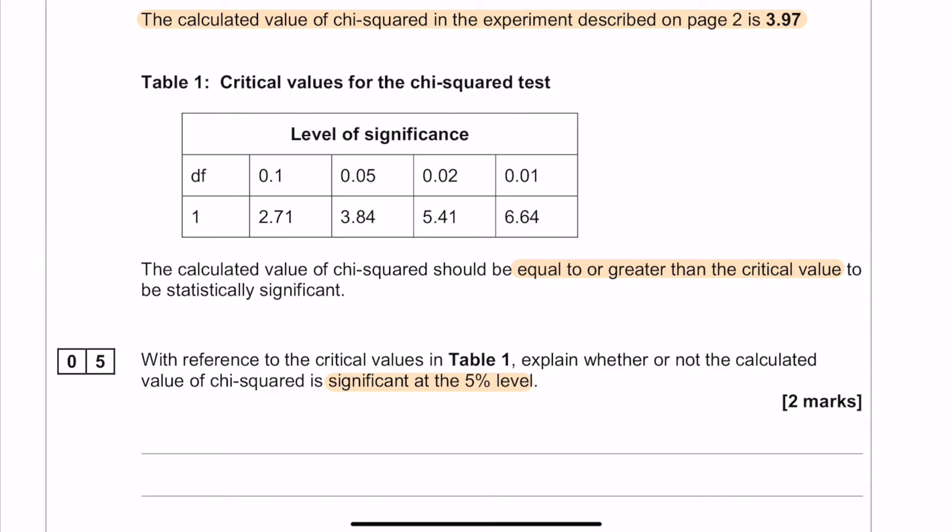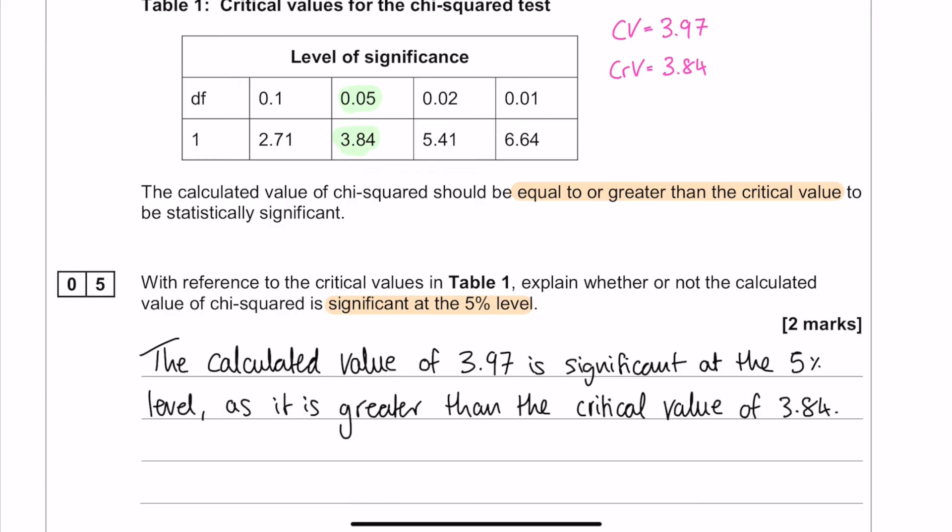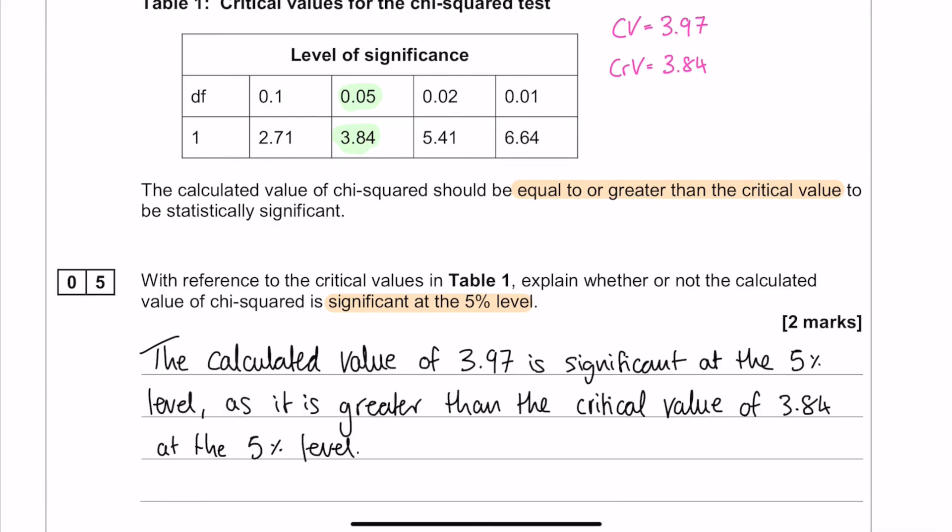So we can work out the critical value because we know what the significance level is. At that point it just becomes a matter of comparing the calculated value to the critical value, because we know that the calculated value needs to be equal to or greater than the critical value in order to be significant. So we just need to put that into words for our two marks. So here it is. And that is our last question.